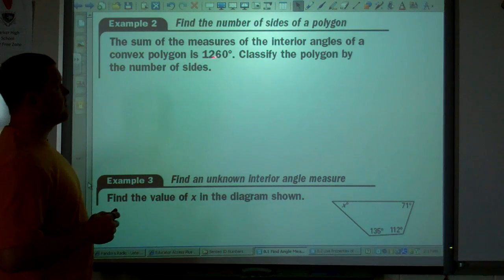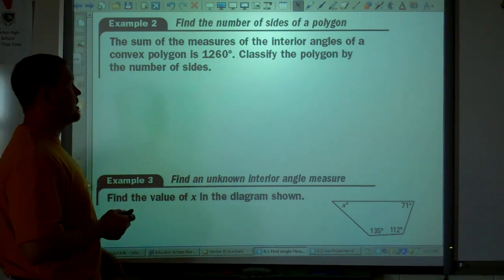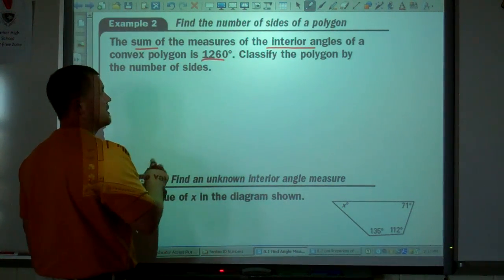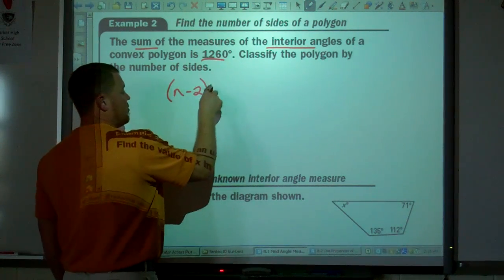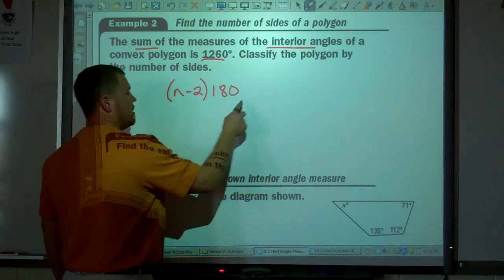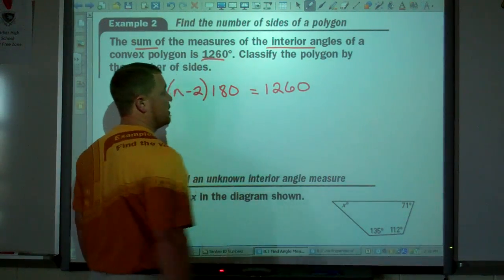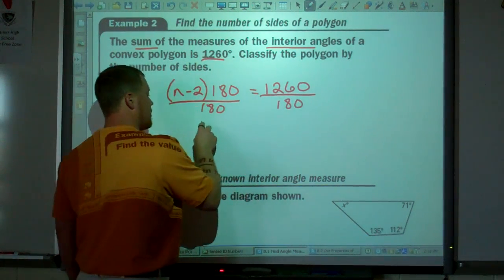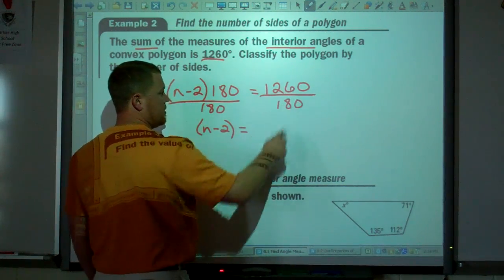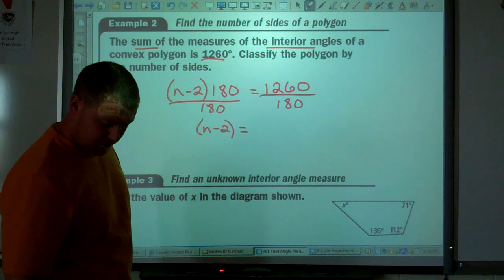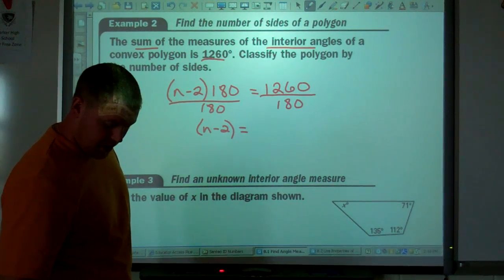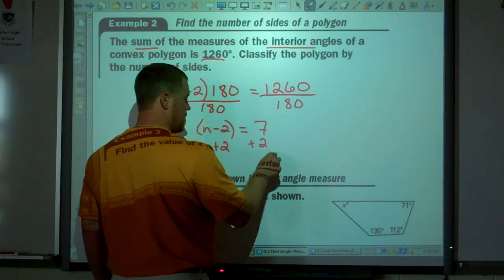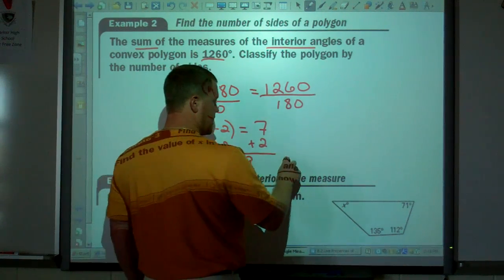The sum of the measures of the interior angles of a convex polygon is 1260. Classify the polygon by the number of sides it has. So they're talking about the sum of the interior angles, and it's 1260. Well, I find the sum by taking n minus two times 180. That will give me the sum of the interior angle measures. So divide by 180. Divide by 180. The quantity n minus two equals 1260 divided by 180 is seven. Add two to both sides. n equals nine. So it is a nonagon.